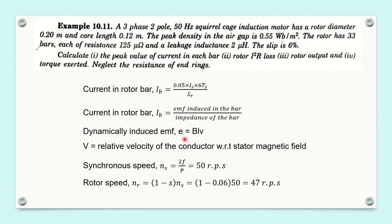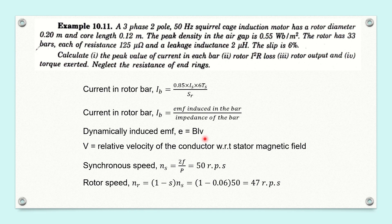The dynamically induced EMF is equal to BLV sinθ. Here we are asked to calculate the peak value of current in each bar — the maximum value — so it will be equal to the maximum value of induced EMF divided by impedance. The induced EMF is BLV sinθ and the maximum value is BLV, where B is the flux density, L is the length of the conductor, and V is the velocity of the conductor.